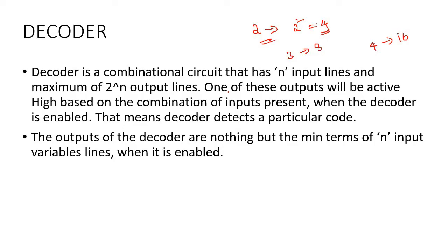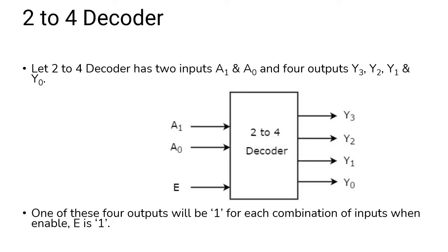When the decoder is enabled, we will get the output corresponding to the input lines. Common decoder types include the 2-to-4 decoder, the 3-to-8 decoder, and the 4-to-16 decoder. The 2-to-4 decoder is the basic root example.